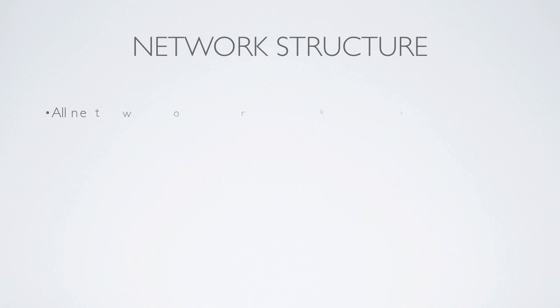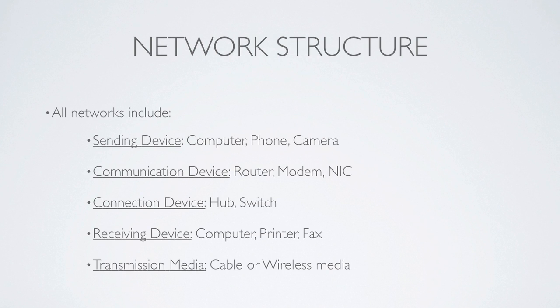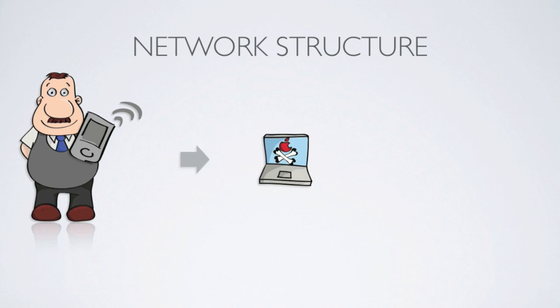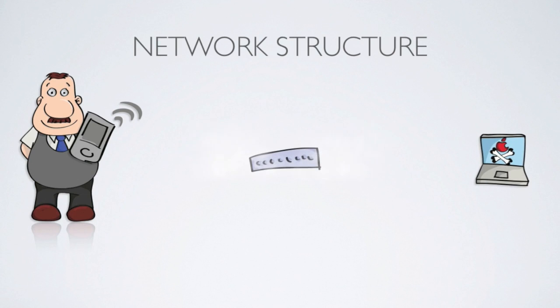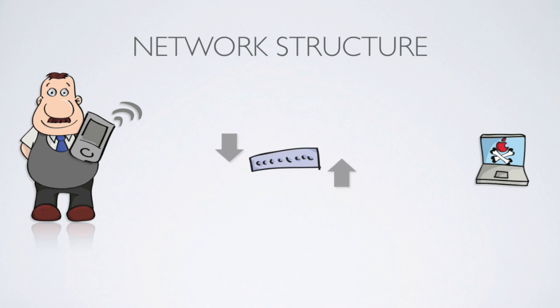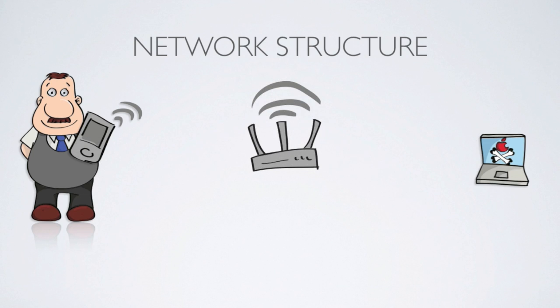Before we get into classification, we need to understand what constitutes a network by defining the network structure. All networks must include a sending device or receiving device, which the user can use to input commands to send data or request to receive data. They must also have a connection device, which connects all the network devices, essentially creating the network via transmission media. And a communication device, which addresses, translates, routes, and allows inter-network communication.